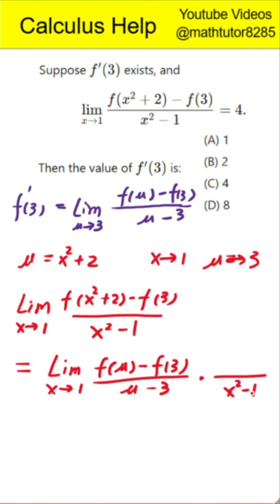Next step. Simplify the ratio. Because u equals x² + 2, we see that u - 3 is exactly equal to x² - 1. Therefore, the fraction (u - 3) over (x² - 1) equals 1.